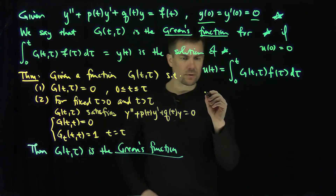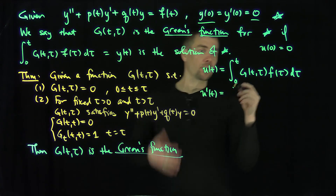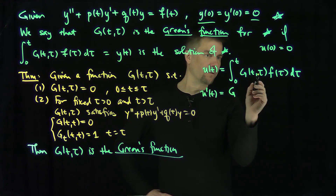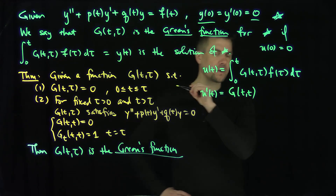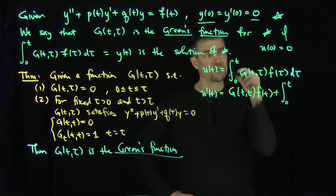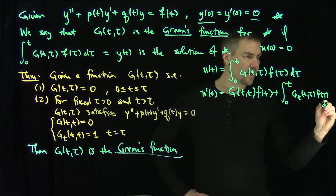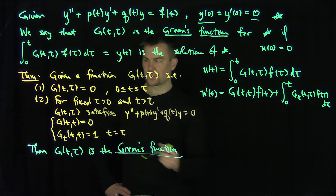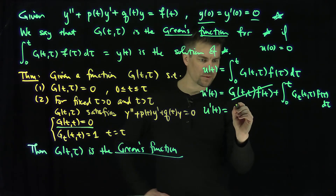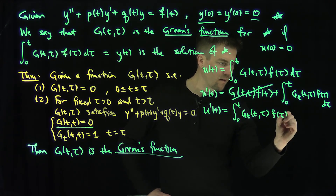Let's do some derivatives. The first derivative u'(t): using the fundamental theorem of calculus, I plug in t wherever I see τ, giving g(t, t) · f(t), plus the integral from 0 to t of the t-derivative of the inside, which is g_t(t, τ) · f(τ) dτ — that's just the Leibniz rule. By assumption, g(t, t) = 0, so that term vanishes, and u'(t) = ∫₀ᵗ g_t(t, τ) · f(τ) dτ.